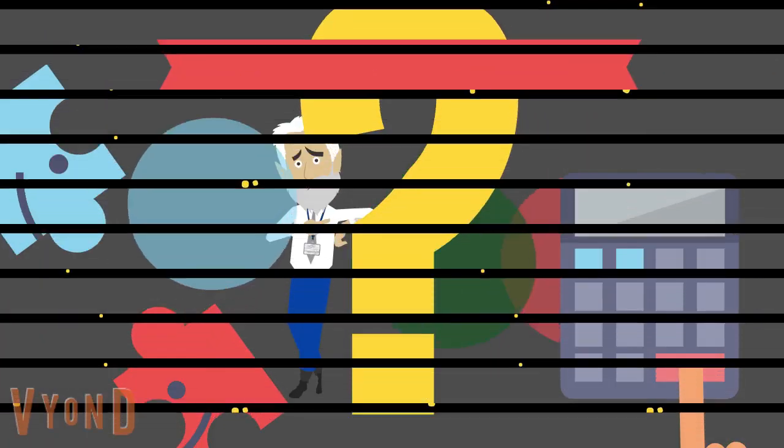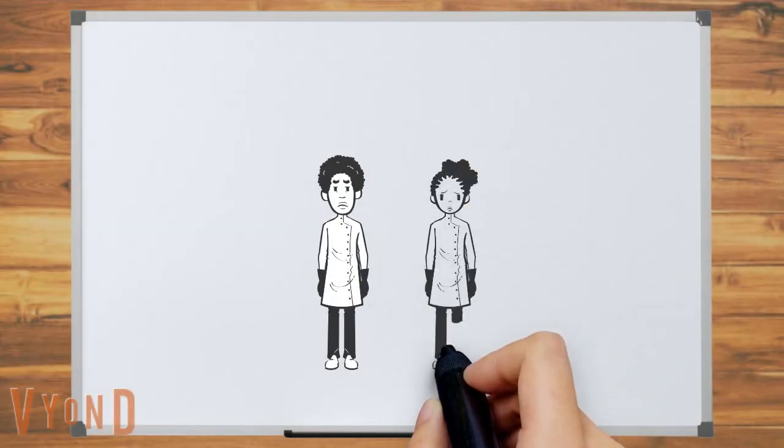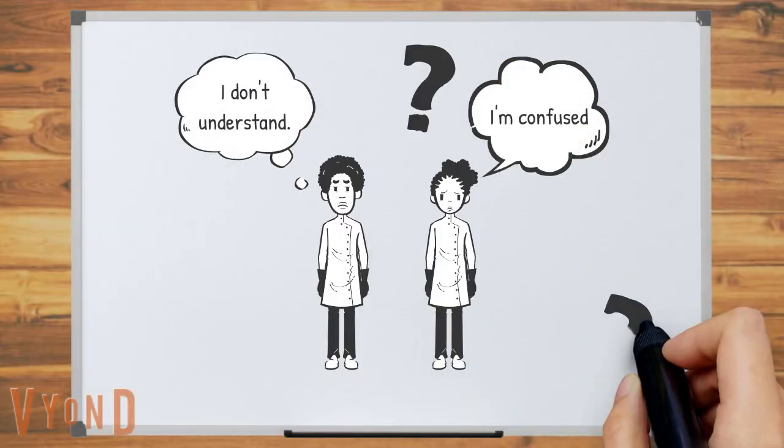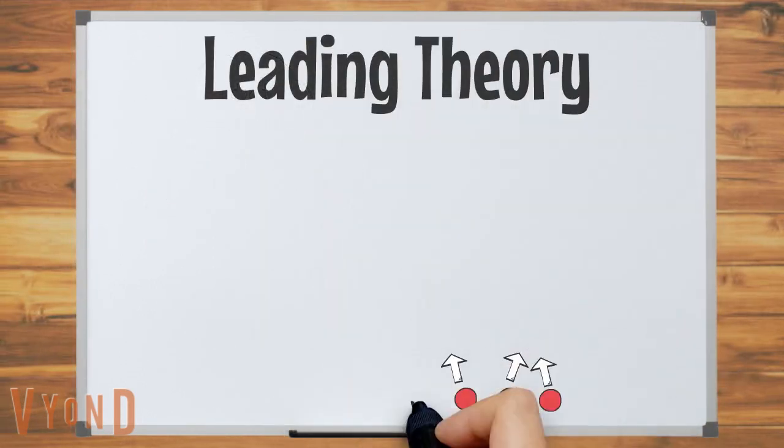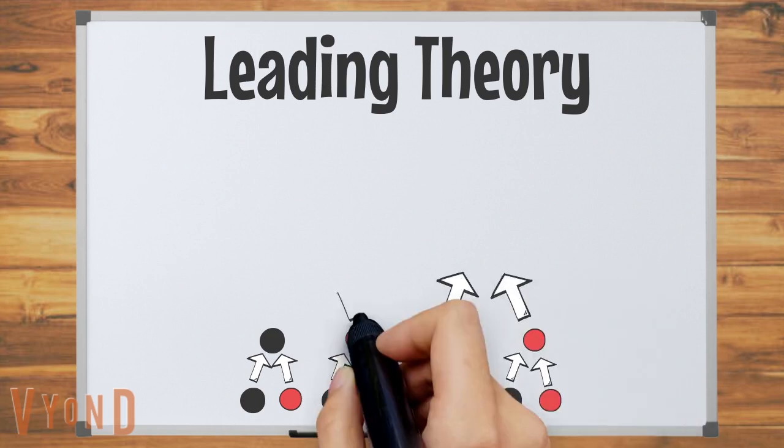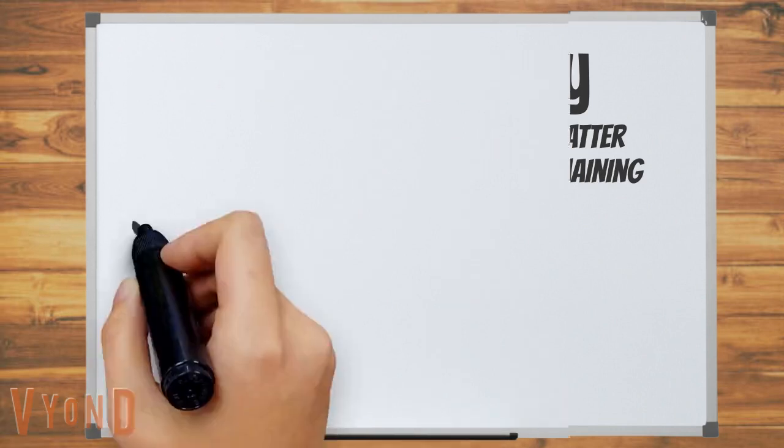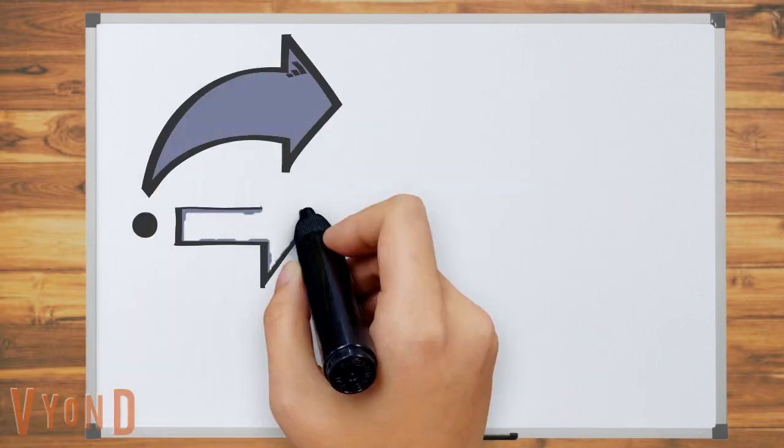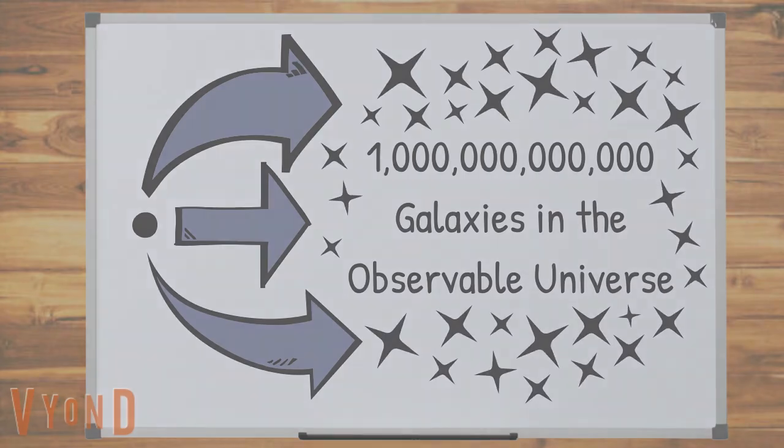This problem is called the matter-antimatter asymmetry problem, and is one of the top unsolved mysteries in modern day physics. However, the leading theory is that in the long run, matter had a slight advantage over antimatter, ultimately leaving all the antimatter annihilated, but some matter remaining. That little remnant could be what forms the one trillion galaxies in our universe today.